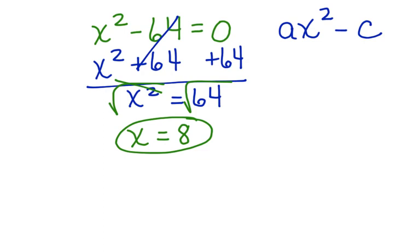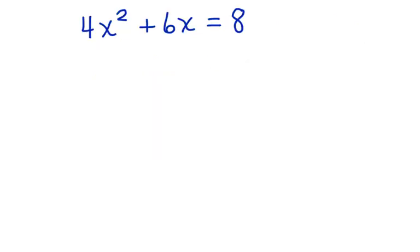Now let's look at another one. 4x squared plus 6x equals 8. Now first, we want to get this equation to equal 0, so we're going to subtract 8 from both sides.